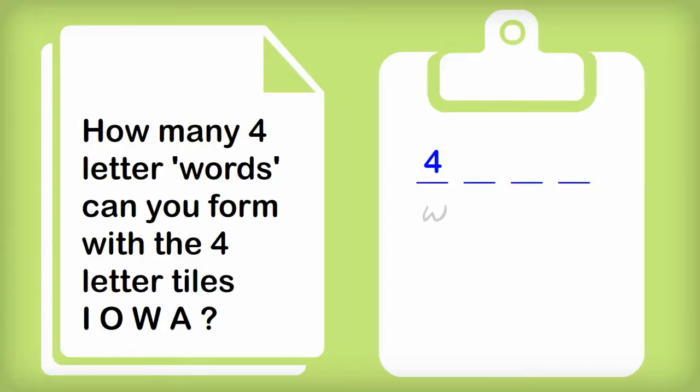For the second dash, there are three possibilities for the second letter of the word, no matter what the first letter is. In the case of W, we could put as a second letter, we could put I, O or A. If you think about it for a while, you'll see no matter what you picked as your first letter, you'll always have three choices for the second. So we'll write a three above the second dash.